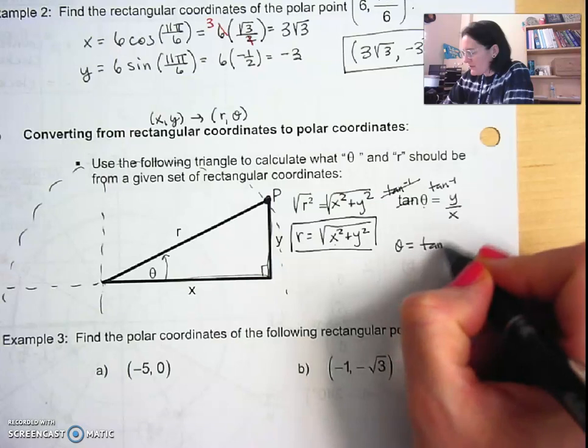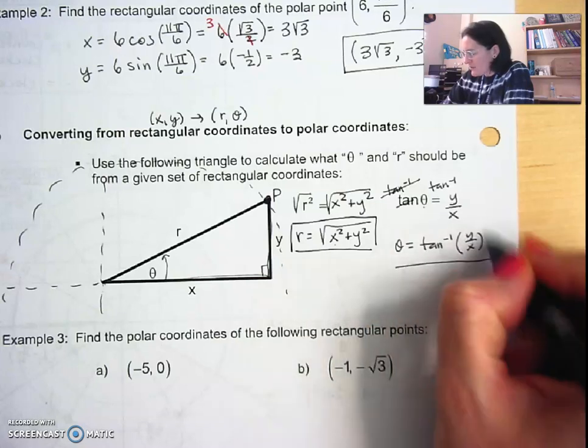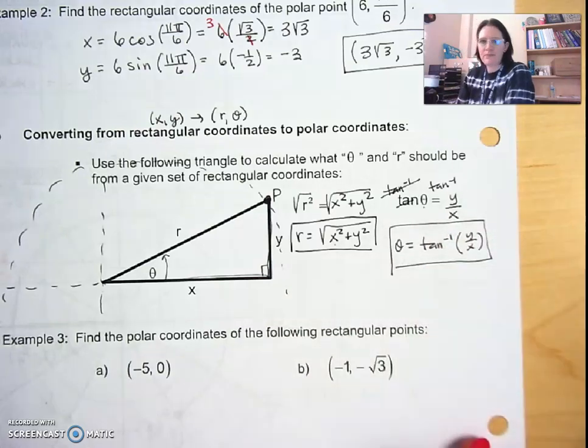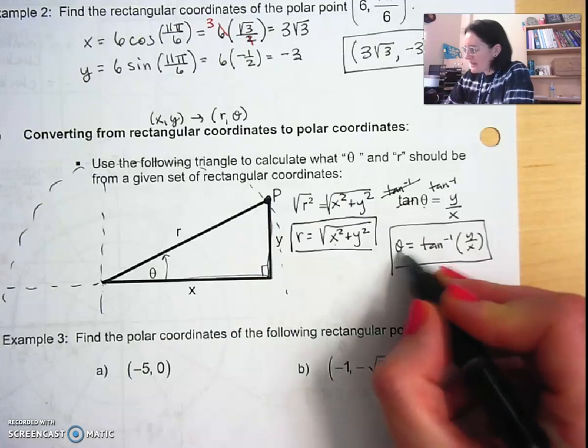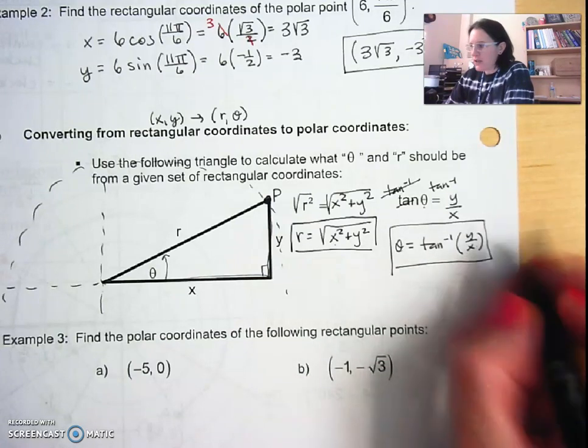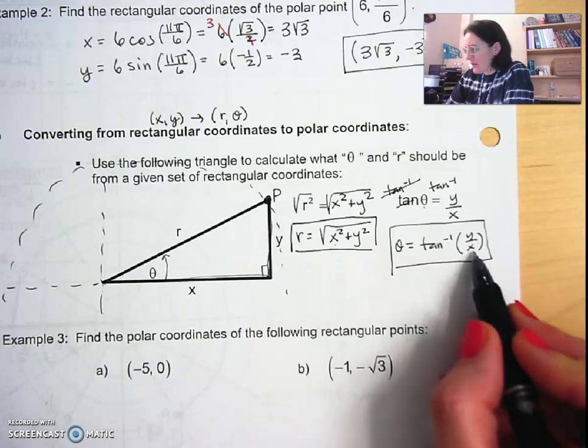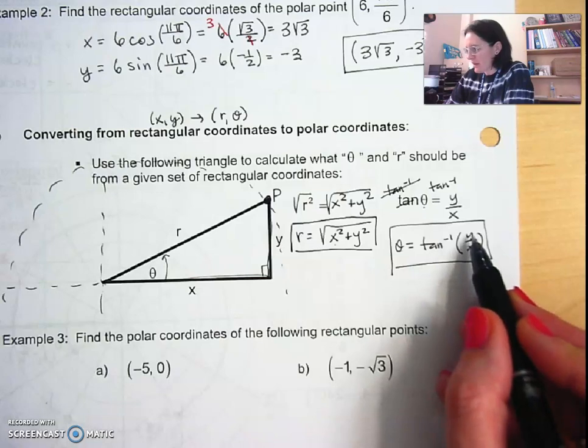So inverse tan cancels out tan, leaving me theta is going to be equal to the inverse tan or arctan of whatever y over x is. Remember when you're taking the inverse tangent of something, you're asking yourself what theta has y over x as its tangent value. You're not calculating the tangent of y over x, you're saying what angle has tangent equal to y over x.